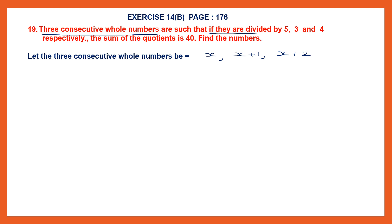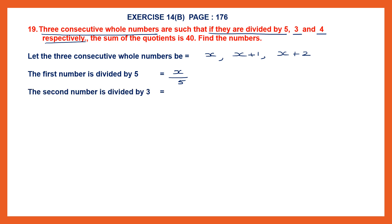The problem says if they are divided by 5, 3 and 4 respectively — that means the first number x is divided by 5, the second number x plus 1 is divided by 3, and the third number x plus 2 is divided by 4. That's why it says respectively.